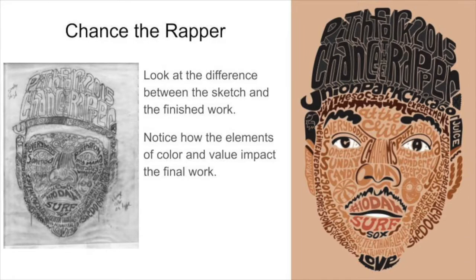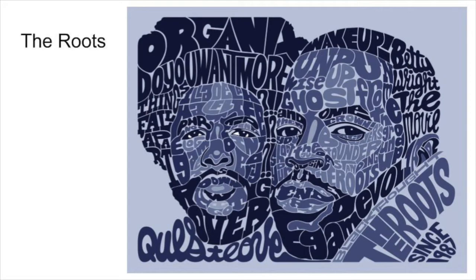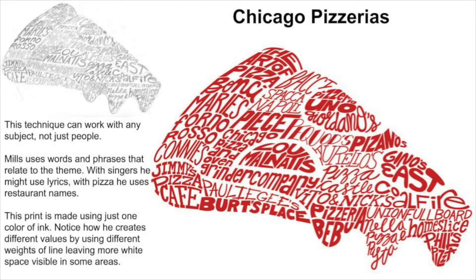In this image of Chance the Rapper, we see not just the words forming the image, but pay attention to how the use of color and value — the shading — helps to affect it. I love how Joe Mills shows a little bit of that process and even shares his sketches, his rough drafts, so we can see the work take shape and how it transforms as he adds colors and each individual element.